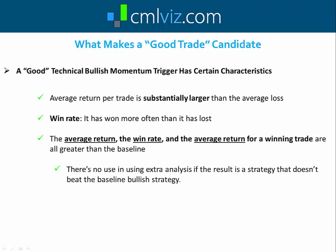First, we want to see the average return per trade substantially larger than the average loss. We want to see the win rate — that it has won more often than it has lost. We want to see that the average return, the win rate, and the average return for a winning trade are all greater than the baseline. We do this because there's no use in applying extra analysis if the result is a strategy that doesn't beat the baseline bullish strategy. Remember, we're dealing with the stock market, which is up on average six out of seven years, so we're looking for something that outperforms a standard bullish strategy.